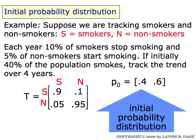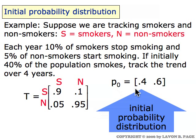The new thing in this example is the initial probability distribution, which simply says that the population we start with consists of forty percent smokers — that's state one — and sixty percent non-smokers — that's state two. Whereas the transition matrix is always square, the initial probability distribution is always just a single one-row matrix where we give the probability of being in each state to start with: forty-sixty in this case.